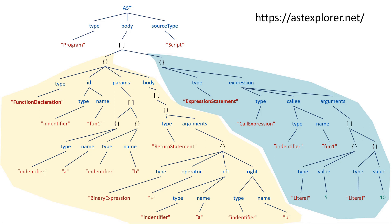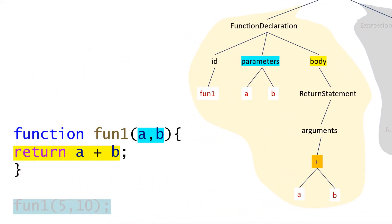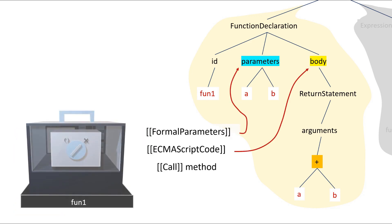This is a somewhat complicated view so I've simplified it. We have a tree structure and the bit we are most interested in is on the left — this is the function declaration. You can see a function declaration node on top with three children: id, parameters, and body. Compare what we see on the tree structure to the source code — it's pretty much the same structure shown in a slightly different way. The formal parameters hidden property directly points to the parameters node in the AST tree, and the ECMAScript hidden property directly points to the body node of the AST tree structure.